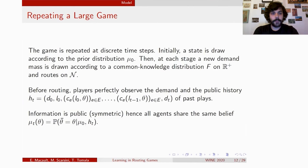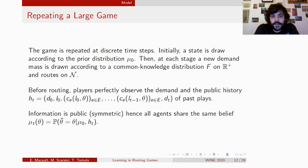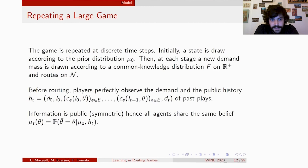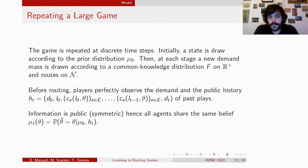We consider a repeated framework as follows. We consider discrete time steps, and originally a state of the world is drawn according to prior distribution mu_0. At each stage, a new demand mass is drawn according to a common knowledge cumulative distribution F and routes across the graph. Before routing, players perfectly observe the demand of the day, and they also observe a public history H_t containing all information from past plays — the demand masses, load profiles on every edge, and costs endured at every stage. Information is perfectly public, so every agent shares the same belief mu_t(theta), corresponding to the conditional probability of a given state given mu_0 and the current history H_t.